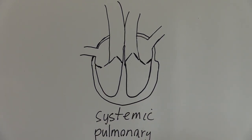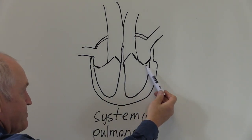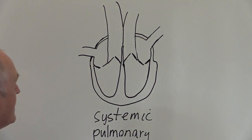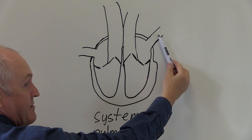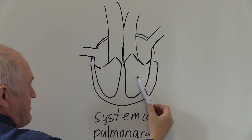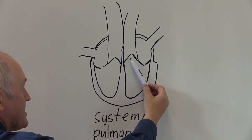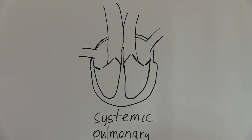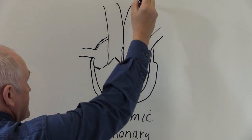Now if you've watched the previous video you'll be aware that that is the mitral or the bicuspid valve pointing down, and you'll be aware that that represents the pulmonary veins. Left atrium, left ventricle. That would make this the aortic semilunar valve and this vessel coming out here the aorta.